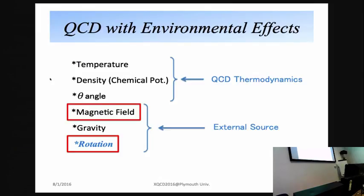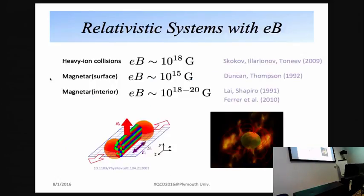In this work, I consider rotation as a kind of external environment. I focus on magnetic field and rotation and discuss QCD dynamics in this environment. The magnetic field is very important for QCD dynamics. We know actual examples where huge magnetic fields exist — for example, in heavy-ion collisions we can create a huge magnetic field, and there is also a strong magnetic field in magnetars, on their surface and inside.